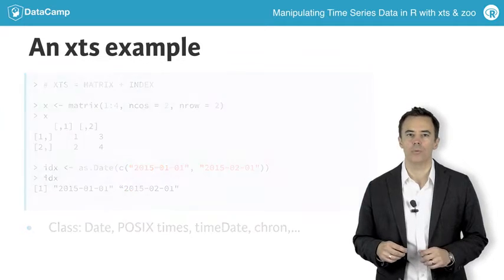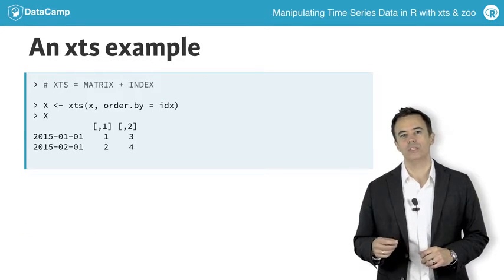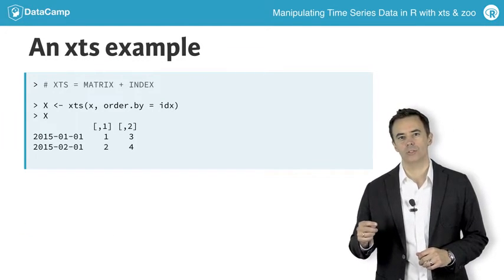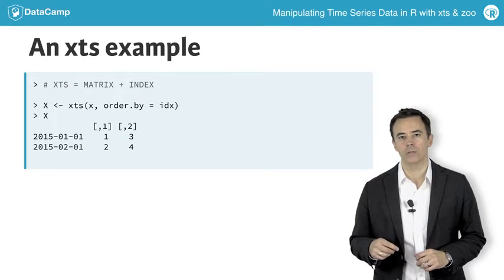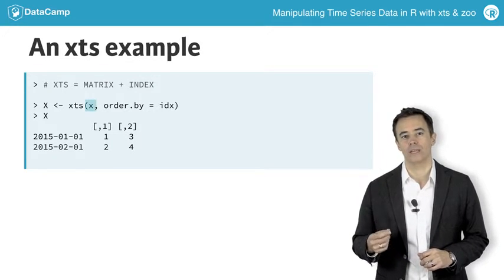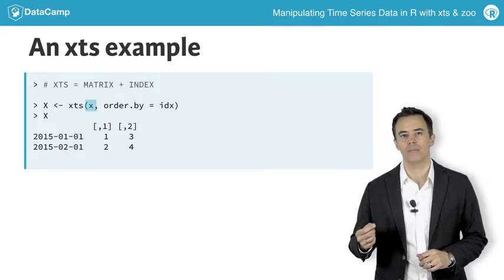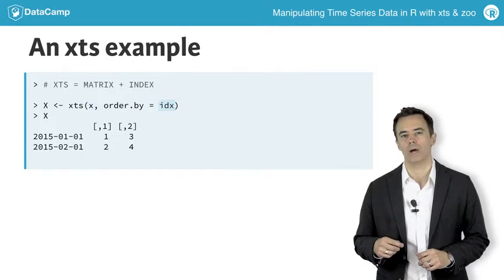At this point, though, we don't have a time series. We'll need to join these to create our XTS object. To do this, we call the XTS constructor with our data X and pass our dates IDX to order.by.